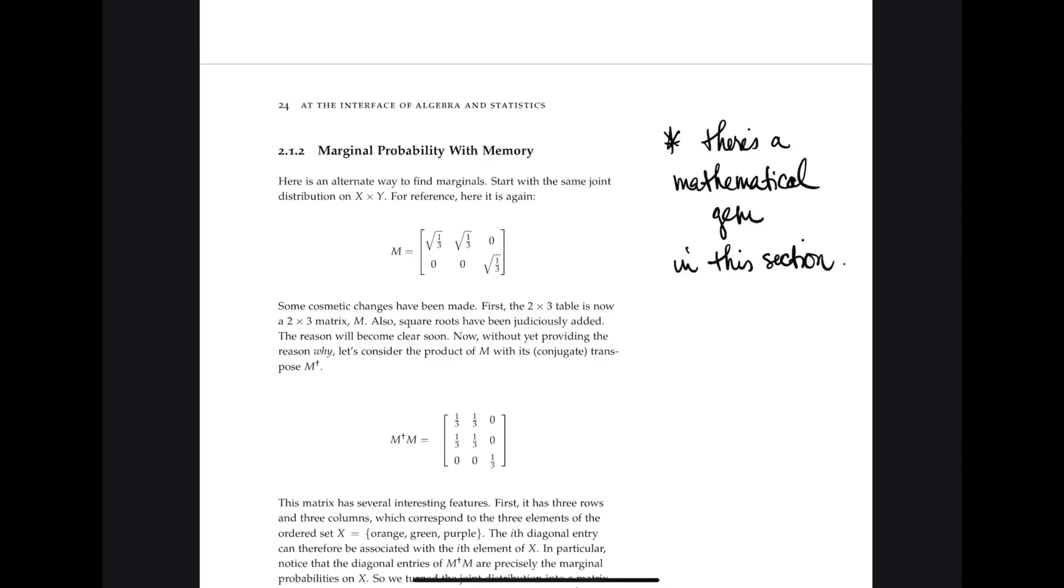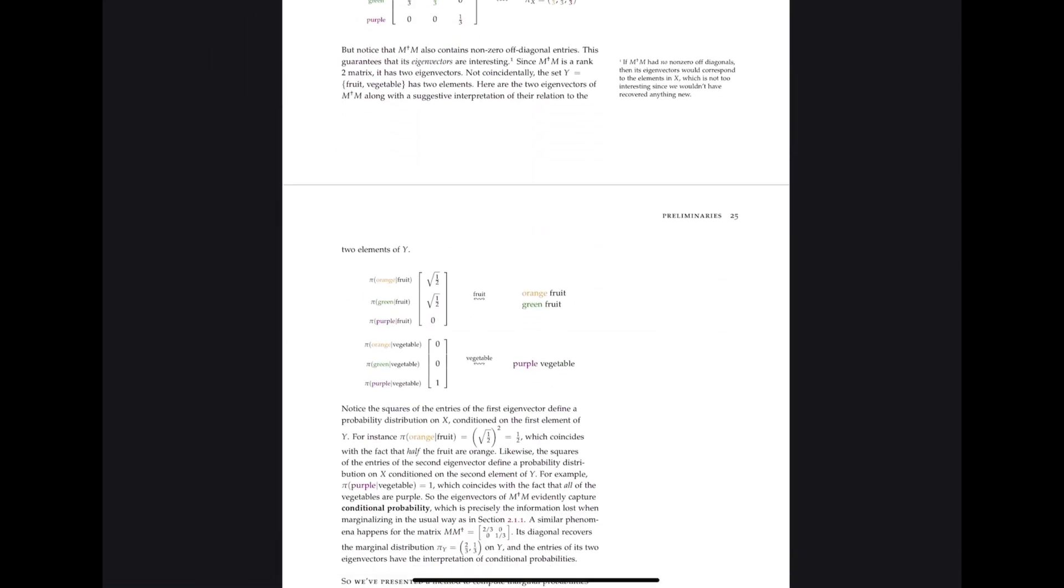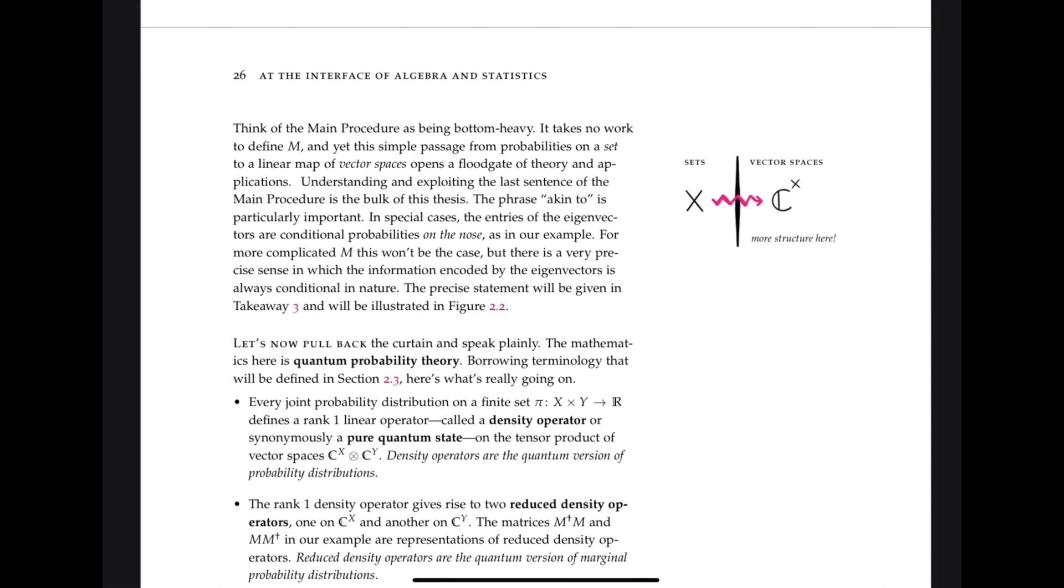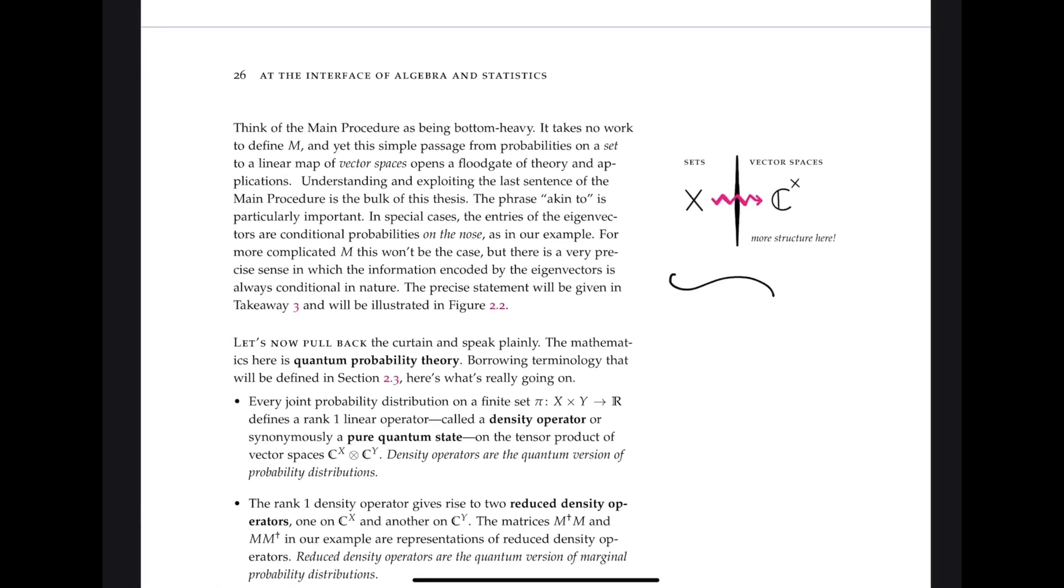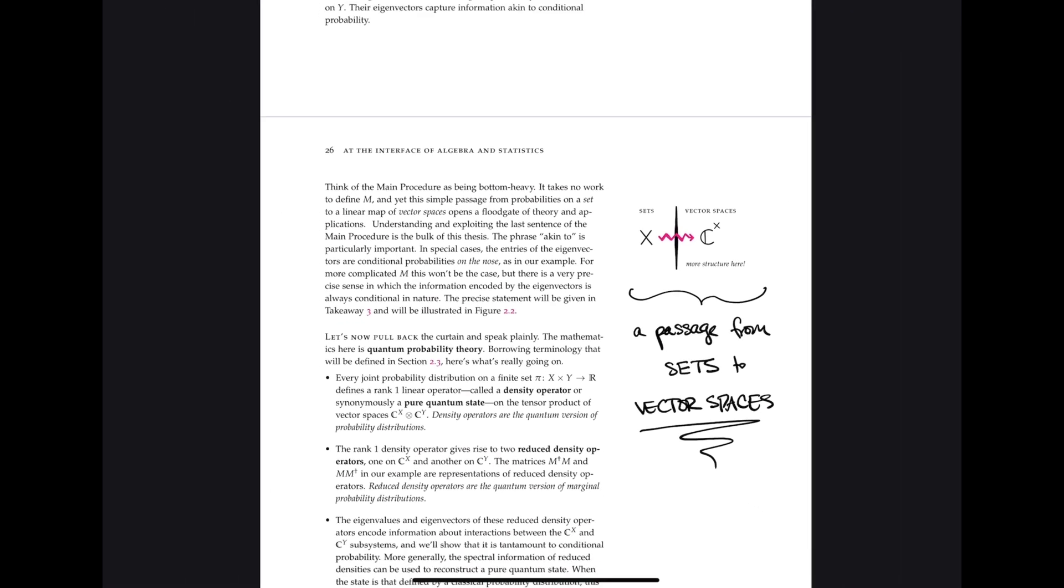And let me just tell you, that idea is essentially a passage from classical probability theory to quantum probability theory. It's a passage from a probability distribution on a finite set to the quantum version of that, a passage from marginalizing probabilities to the quantum version of that. Now, this passage is essentially just a passage from sets to vector spaces or a passage to linear algebra. So that's what you'll find in the rest of chapter 2, where I describe the quantum analogs of basic tools from probability theory.